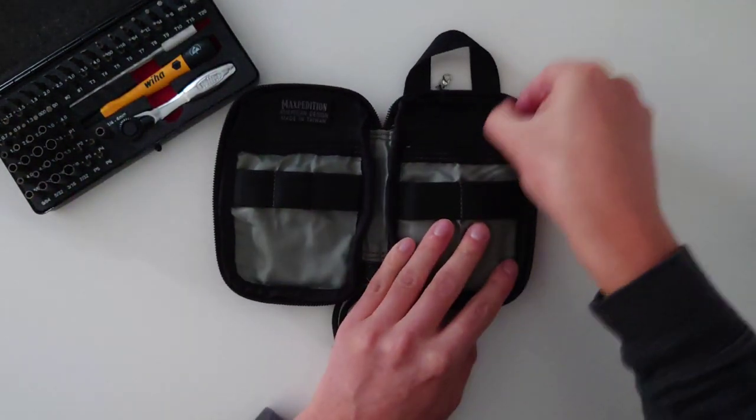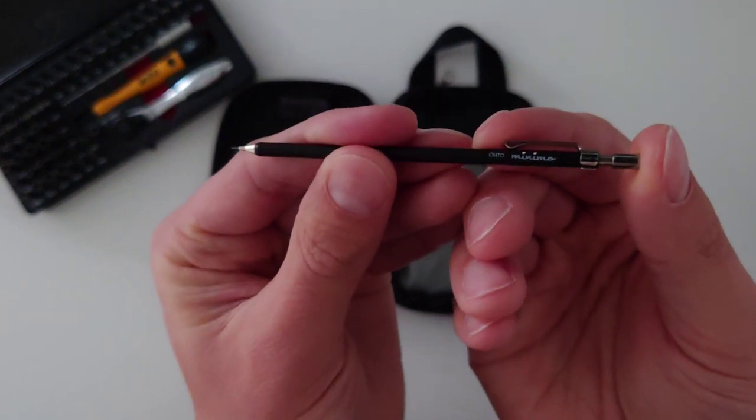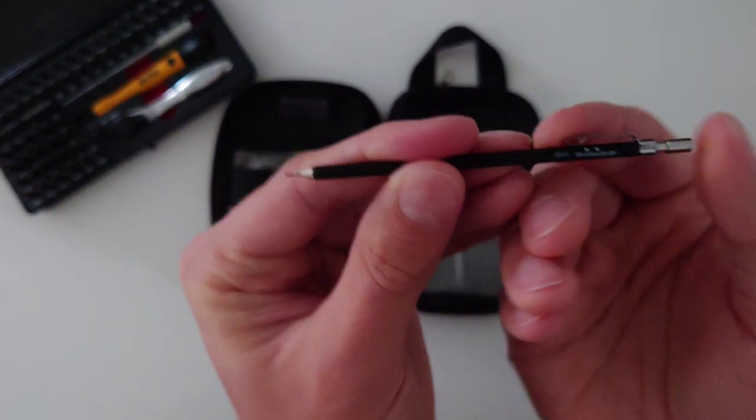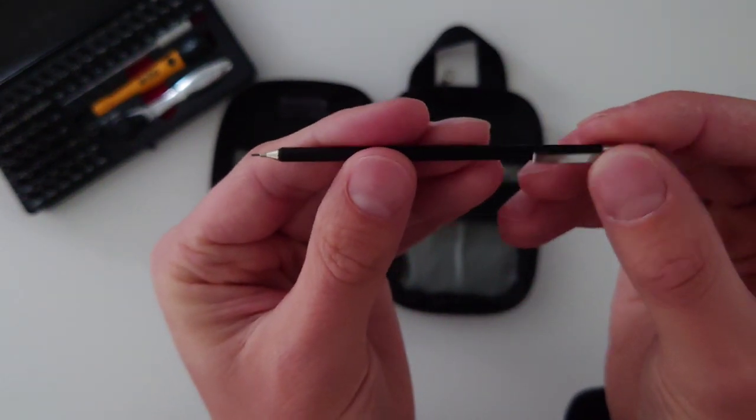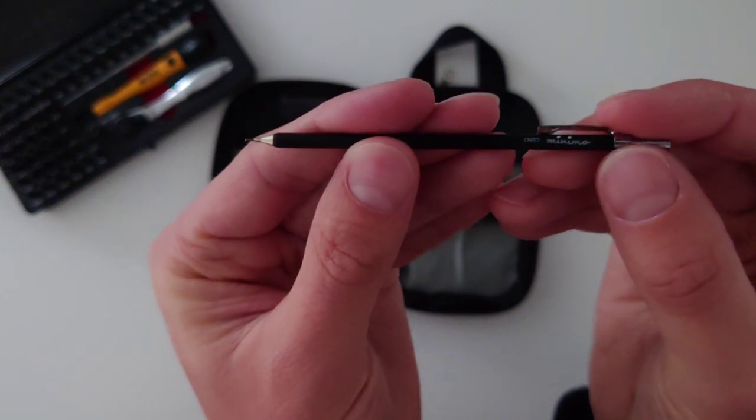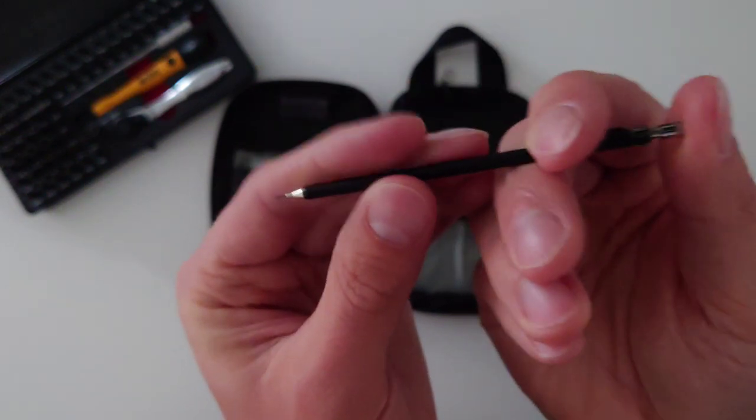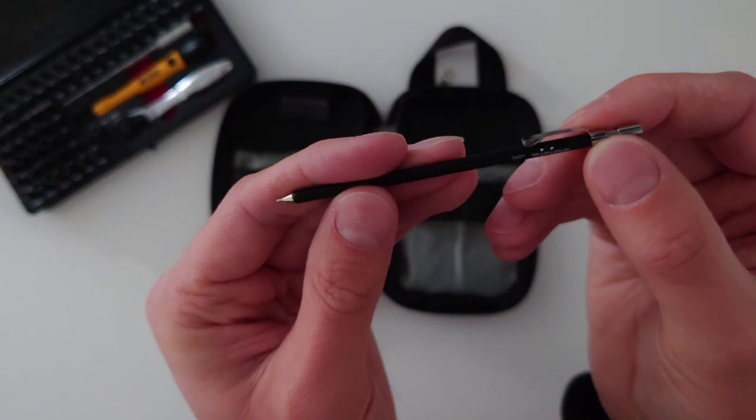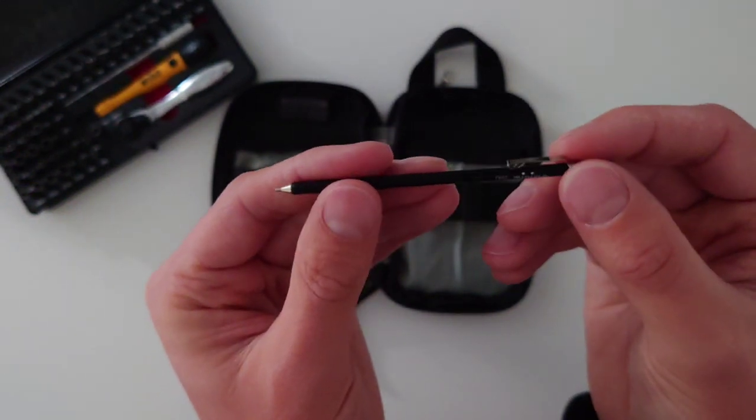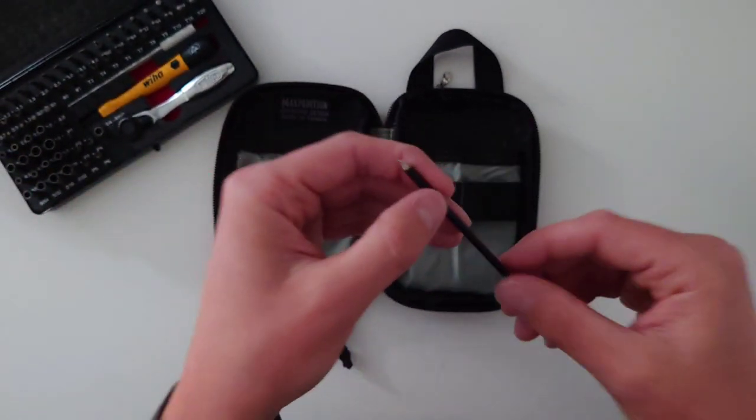As well as that, I've got a tiny little mechanical pencil, which is the Minimo by Oto. It's really handy, actually. I've found that I use it just as much as a lot of the other items in there. Yeah, that's really highly recommended.